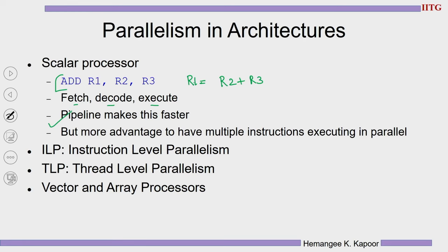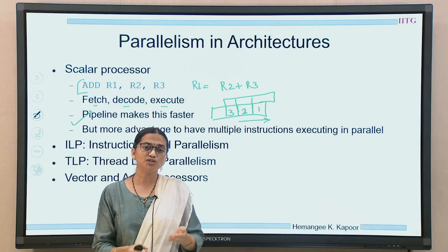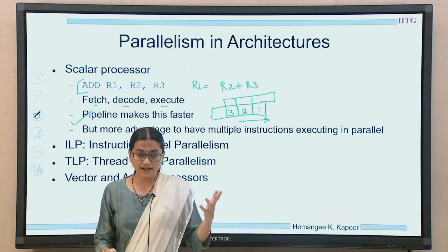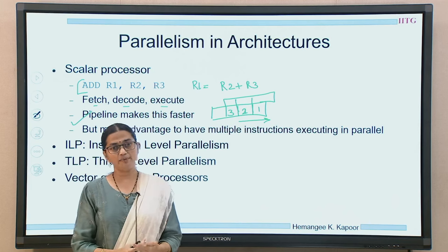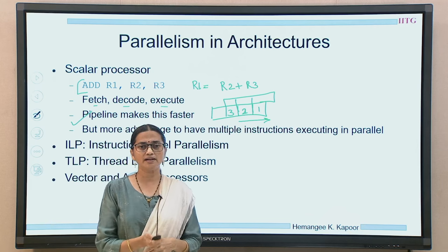A pipeline helps you execute a different instruction in a different unit simultaneously — instruction 1 in one stage, instruction 2 in another, and instruction 3 in another. In a pipeline system there is an initial latency, but throughput is very high — potentially one instruction executed every clock cycle. More advantages come if we can execute multiple instructions at once. The two avenues for this are ILP (instruction level parallelism) and TLP (thread level parallelism). We will also look at vector and array processors.